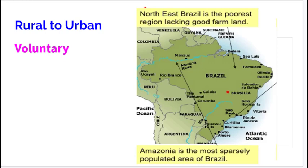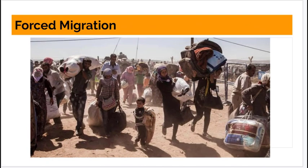We can also look at voluntary migration through step migration. Migration streams may appear on maps as long and broken, but step migration shows gradual movement — for example, a peasant farmer in rural Brazil might first move to a village, then a nearby town, then a city, and finally a major metropolitan area like Rio de Janeiro. At each stage, different push and pull factors drive the movement.